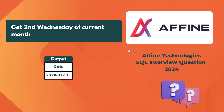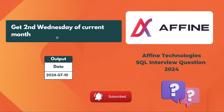Hello everyone, welcome back to the channel. In this video I will be covering one of the SQL interview questions recently asked in an Affine Technologies interview. We need to find out the second Wednesday of the current month. We are currently in July 2024, and the second Wednesday is falling on 10th July 2024 — that is what we need to get as output.